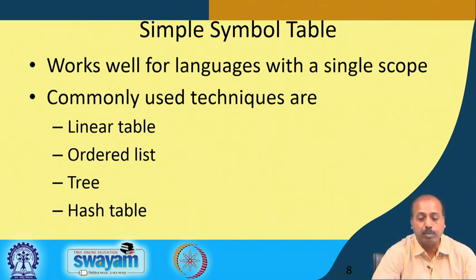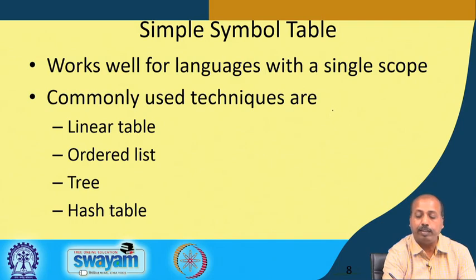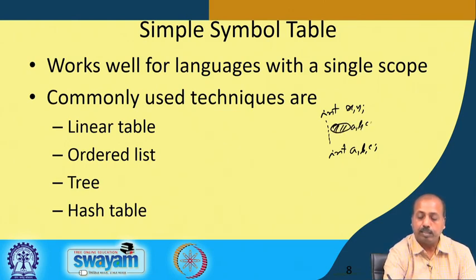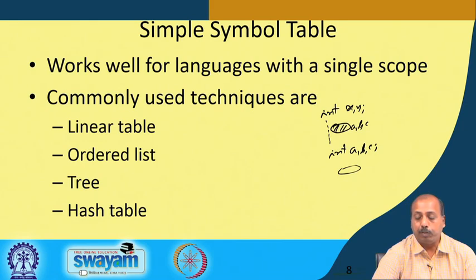Simple symbol tables work for languages with a single scope — where everything is visible everywhere, meaning all variables are effectively global. For this type of language, the common structures are: a linear table (simple array), an ordered list, a tree structure, or a hash table.